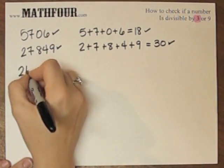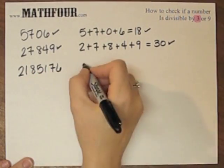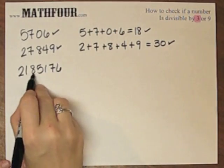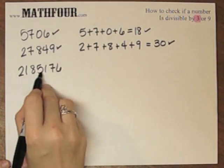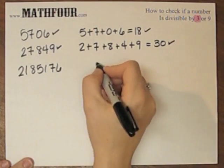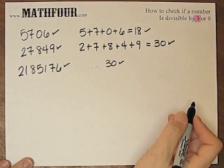And then how about 2185176. I'm not going to write those out. This is 3 plus 8 is 11, plus 5 is 16, 17, plus 7 is 24, plus 6 is another 30. So that's also divisible by 3.